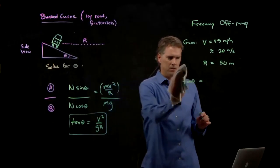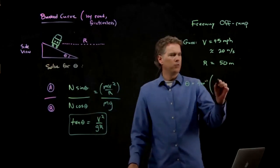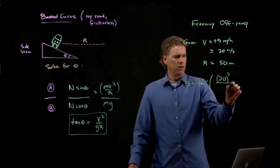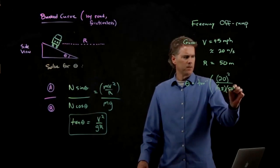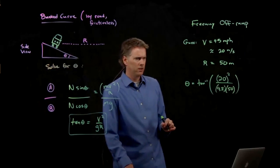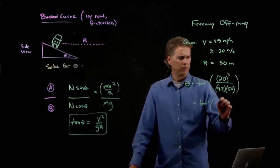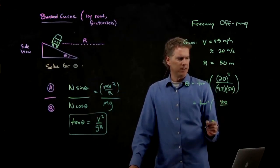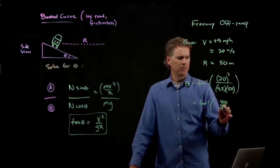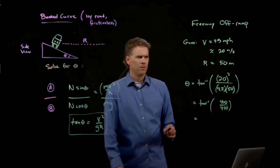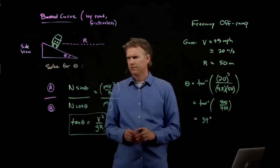Tangent of theta. So we need to take the arc tangent. And if we take the arc tangent of V squared, which we said was 20 squared, and we're going to divide by G, 9.8, and R, we said was 50, why don't you guys punch that into your calculator and tell me what you get. We've got the arc tangent of 20 squared, which is 400, and in the bottom we have 50 times 9.8, which is pretty close to 500. It's 490 or something. What do you guys get? 39 degrees.